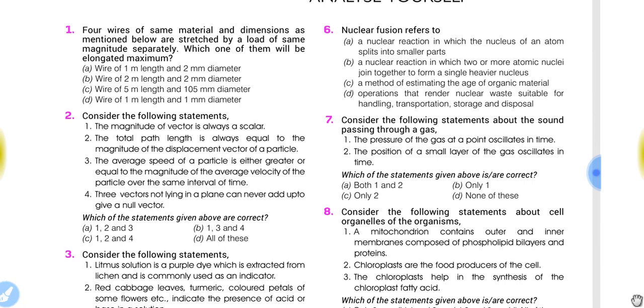Question number 7: Consider the following statements about the sound passing through a gas. The pressure of the gas at a point oscillates in time. The position of a small layer of the gas oscillates in time. The correct option is that both statements are correct. Option A is the correct answer.